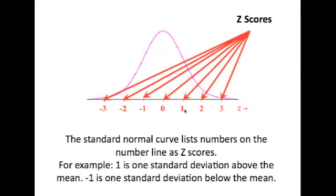For example, one is the standard deviation above the mean, and negative one is one standard deviation below the mean. This is not as hard as you thought it was.